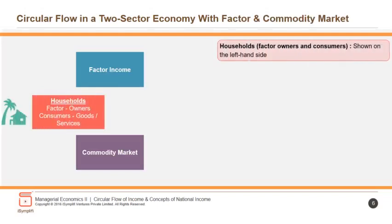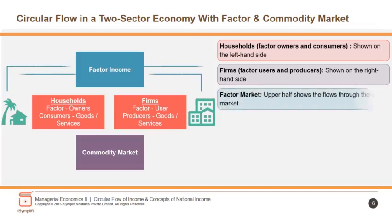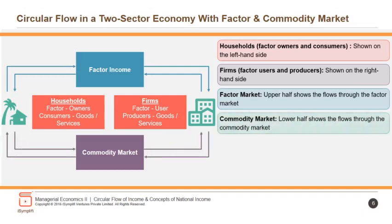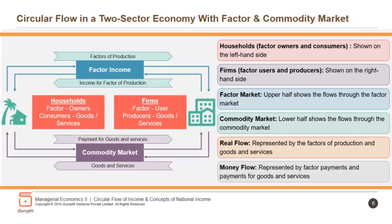In the circular flow in a two-sector economy with factor and commodity market: households — factor owners and consumers — are shown on the left-hand side; firms — factor users and producers — are shown on the right-hand side. The factor market in the upper half shows the flow through the factor market. The commodity market in the lower half shows the flows through the commodity market. Real flow is represented by factors of production and goods and services. Money flow is represented by factor payments and payments for goods and services.